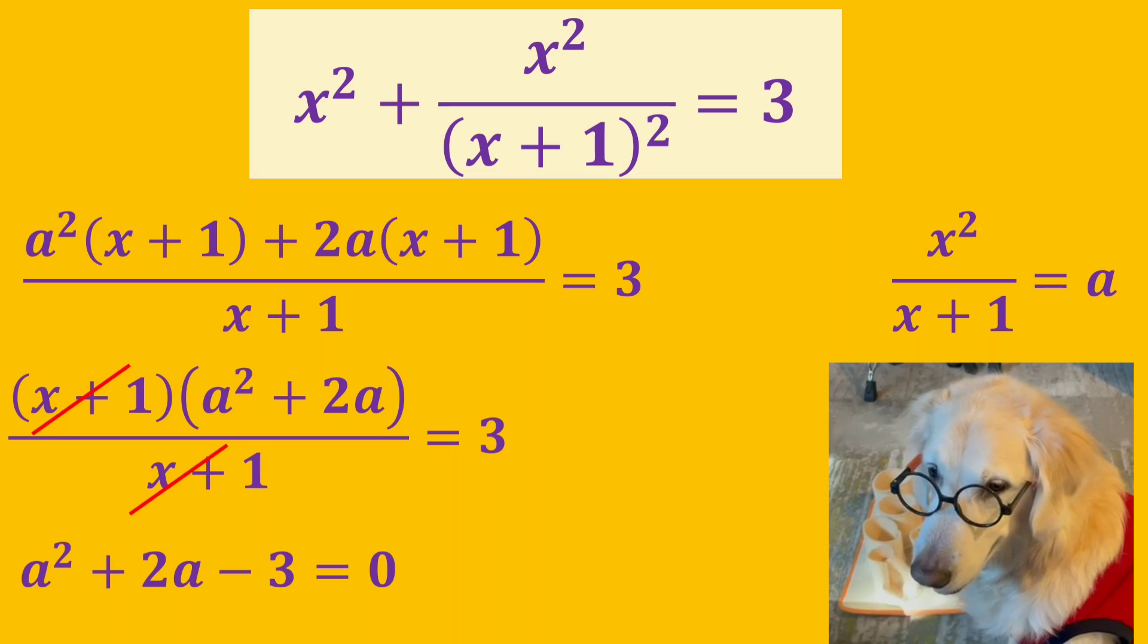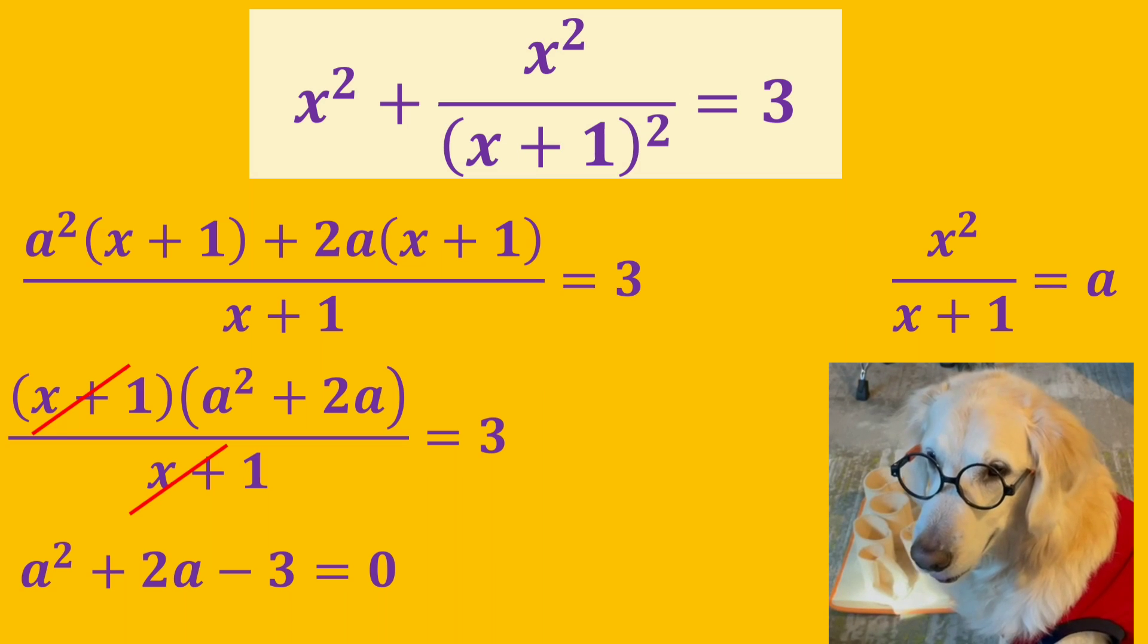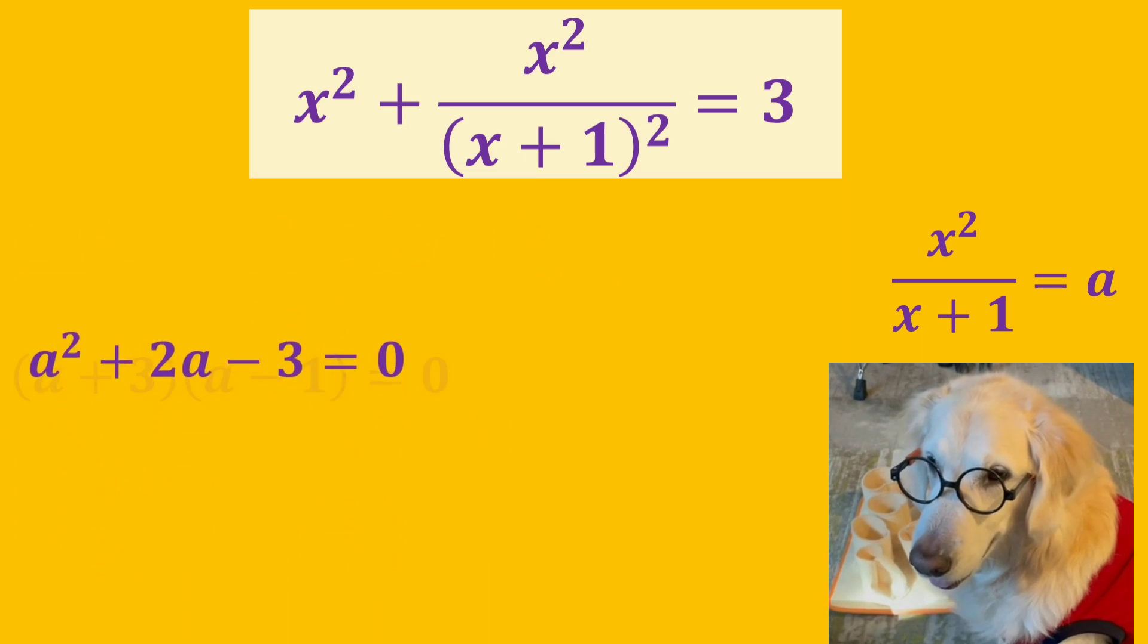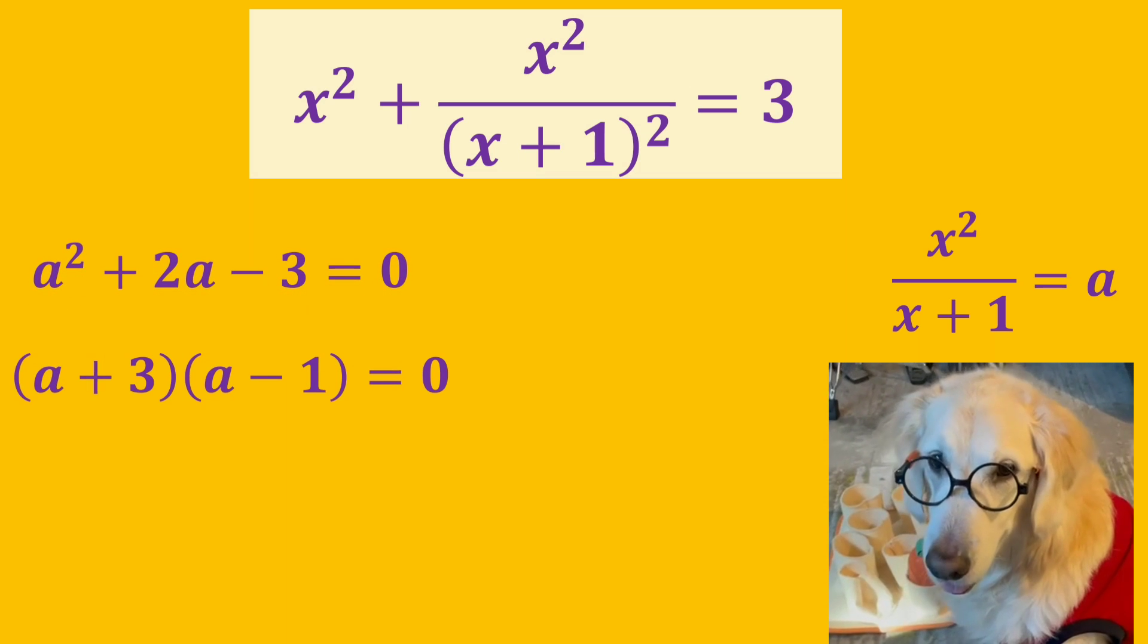Now we have this equation. A squared plus 2a minus 3 is equal to 0. We can factor this equation like this.